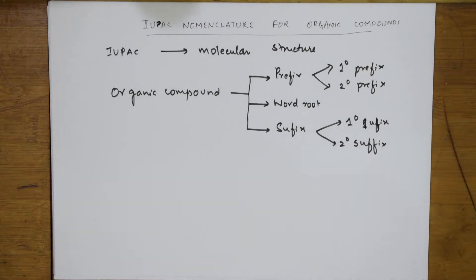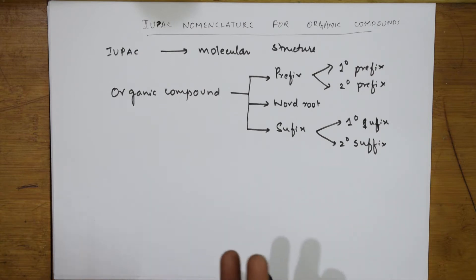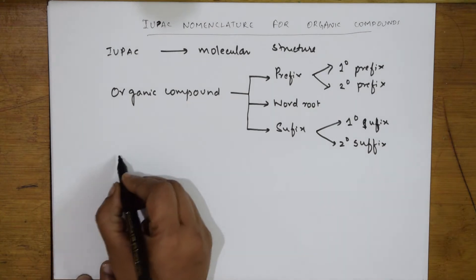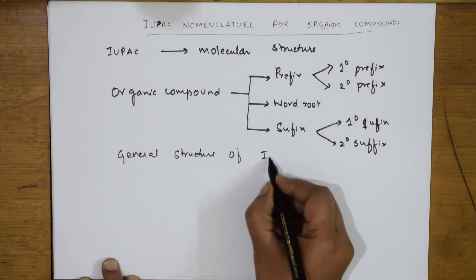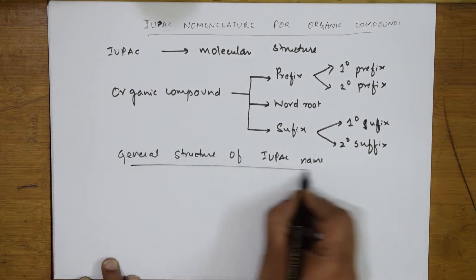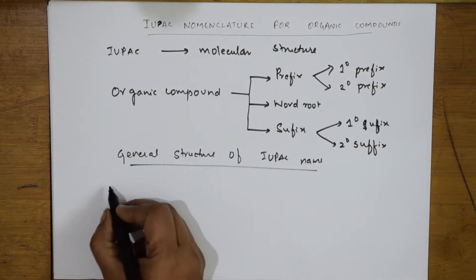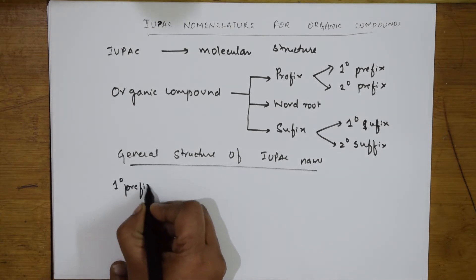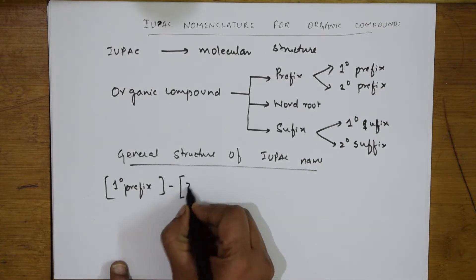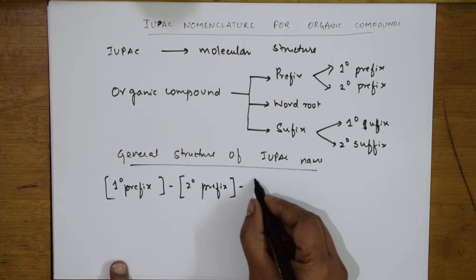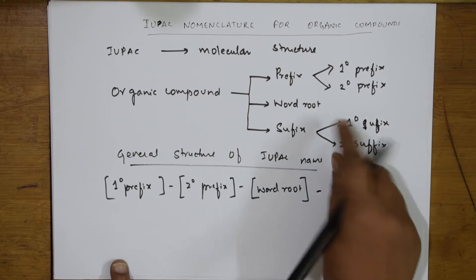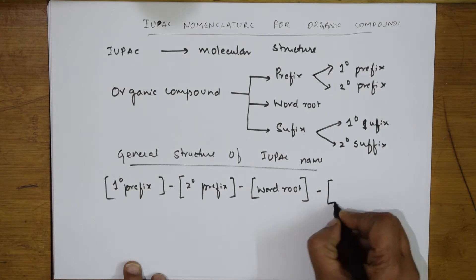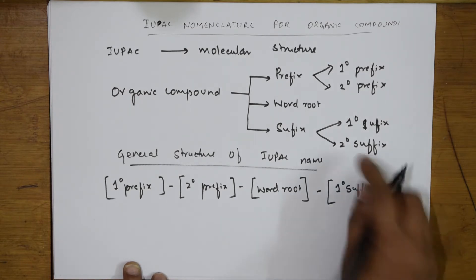When I have to speak about primary suffix and secondary suffix, I will explain one after the other. Generally, whenever you are naming or writing an IUPAC nomenclature for the given compound, the general structure of the IUPAC name is written in this order: primary prefix, then secondary prefix, then word root, then primary suffix, and then secondary suffix.